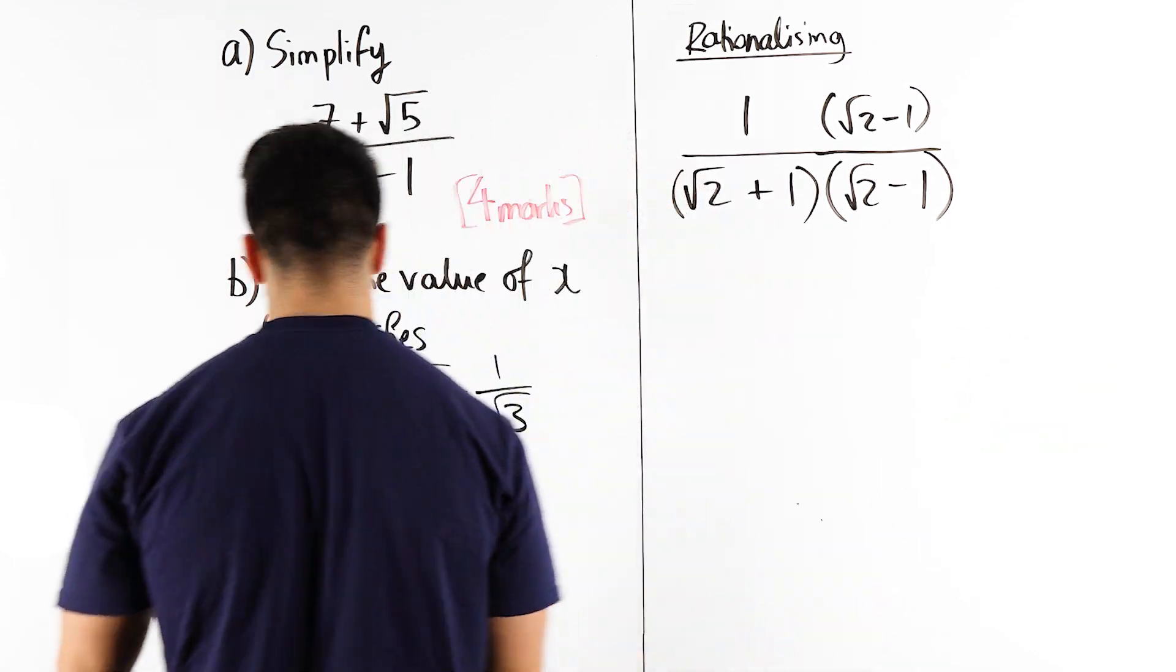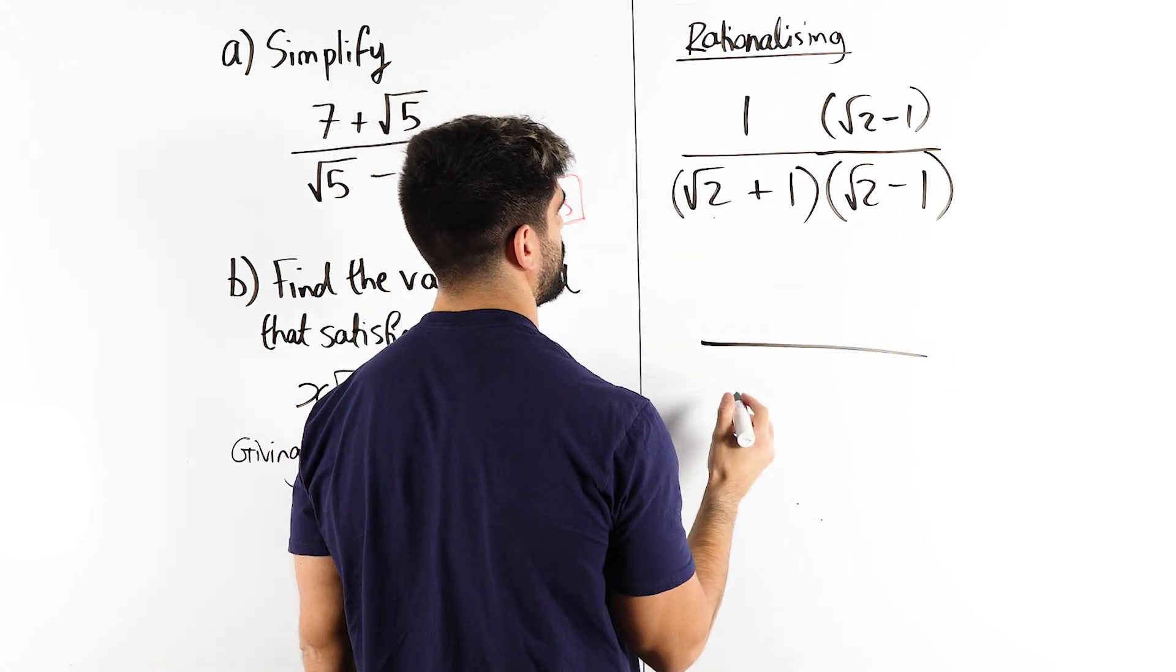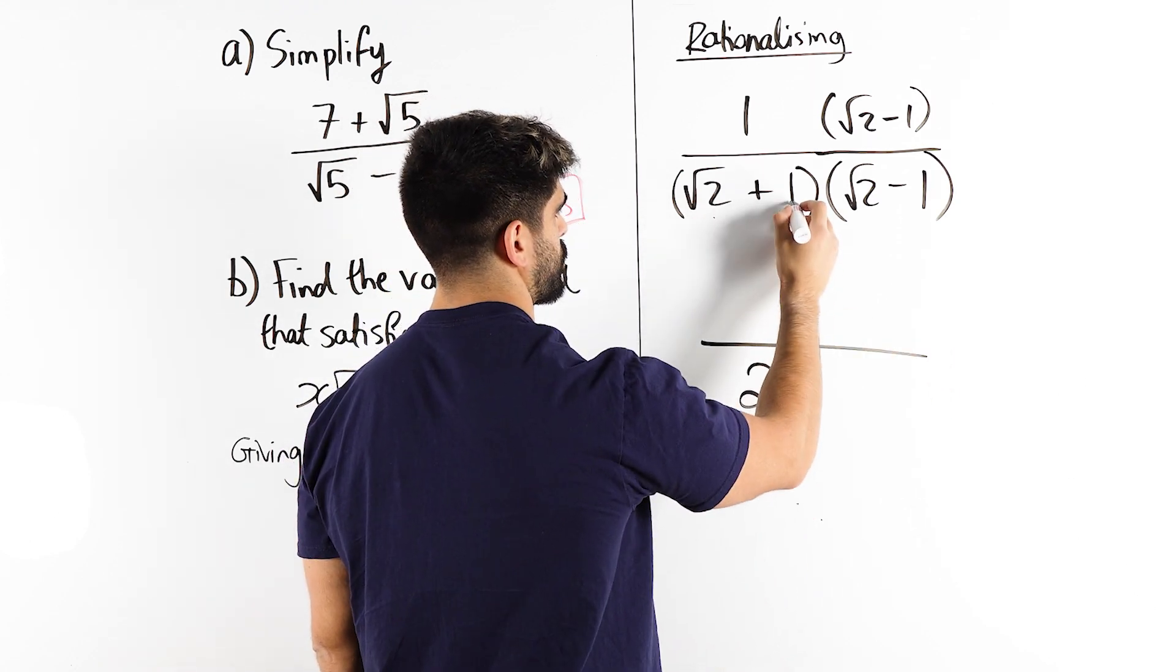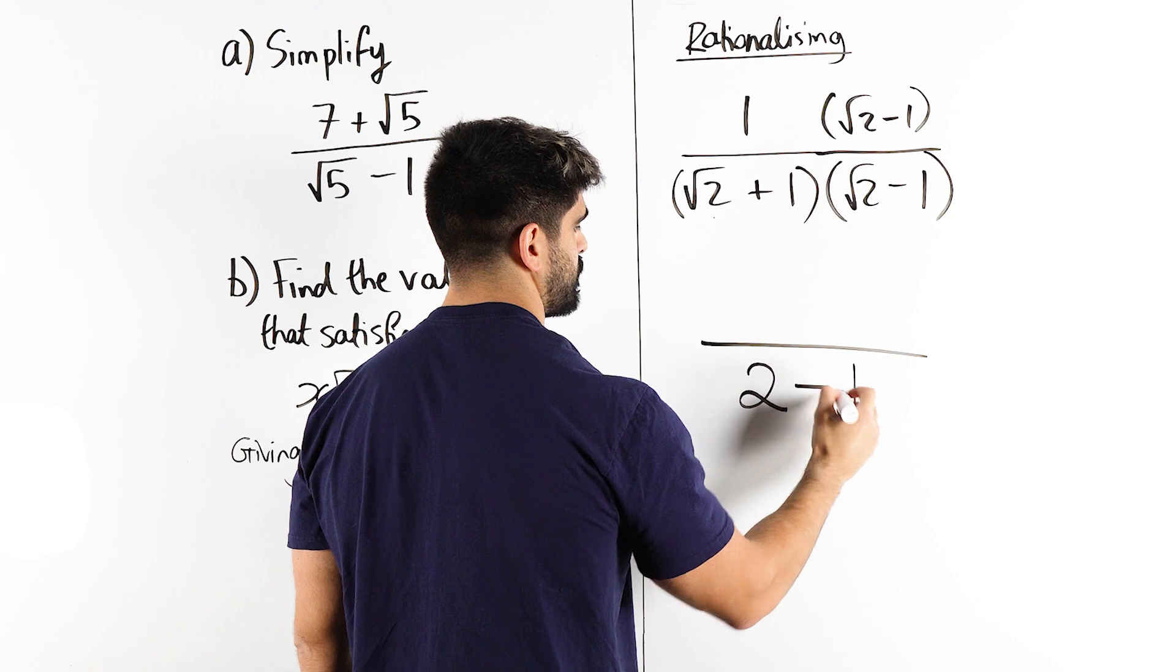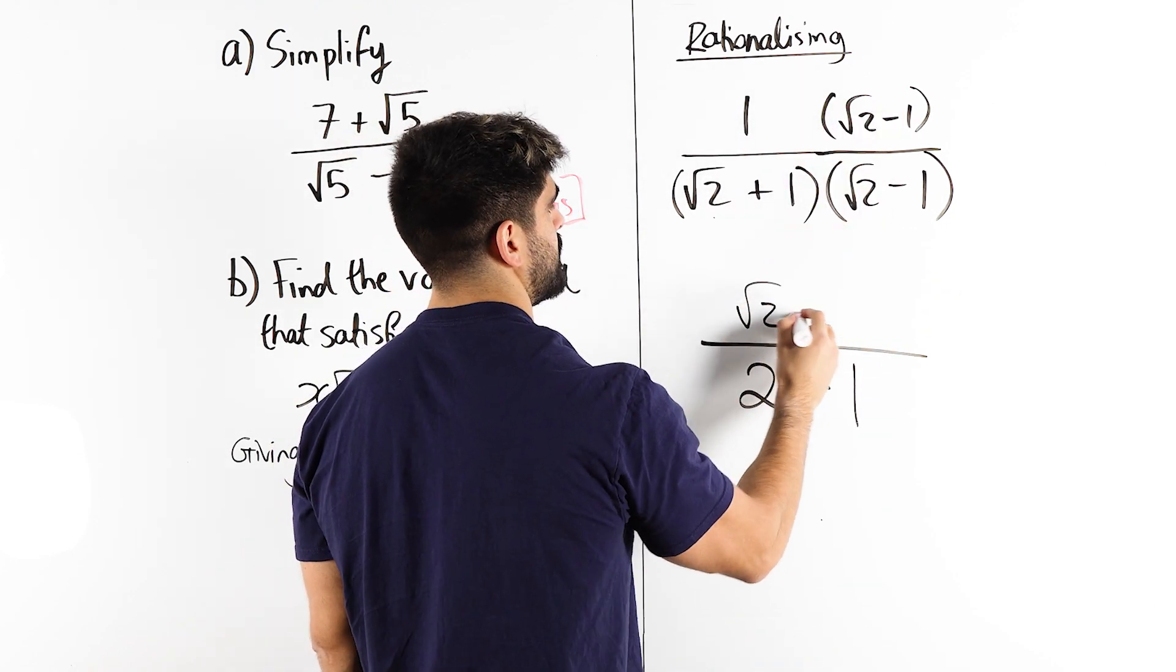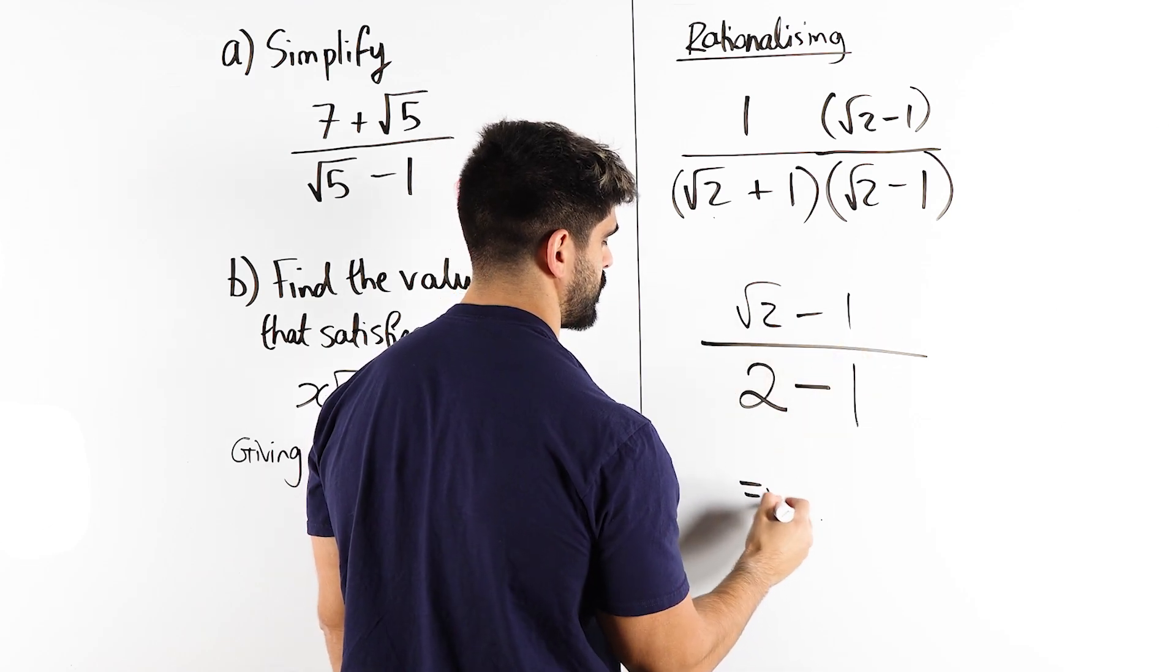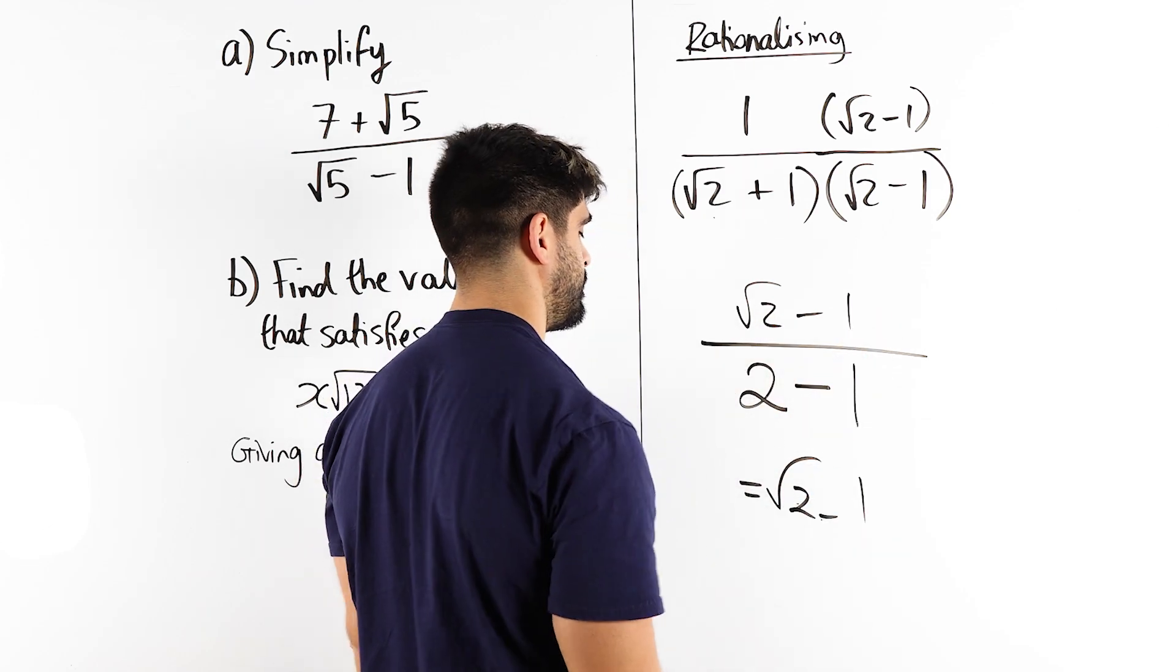Well, the square of root 2, the square of root 2 is 2, the square of 1 is 1, you subtract them. On the numerator, you just have 1 times this, which is just this. 2 minus 1 is 1, so we're just left with root 2 minus 1. Nice.